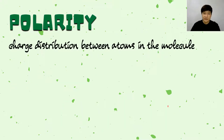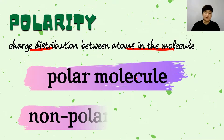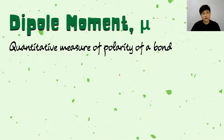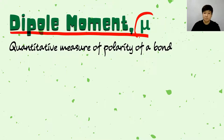What is actually polarity? Polarity is the charge distribution between atoms in a molecule, and polarity is used to determine whether we have a polar molecule or a non-polar molecule. The polarity of the molecule will depend on a dipole moment — we use the symbol mu. Dipole moment is the quantitative measure of the polarity of a bond.